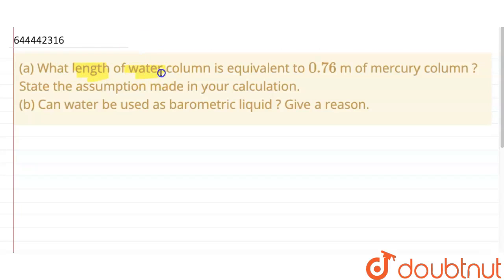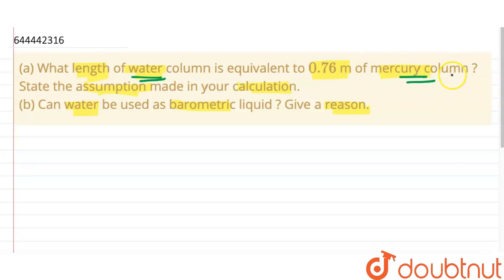The question is: what length of water column is equivalent to 0.76 meters of mercury column? State assumptions made in your calculation. Can water be used as a barometric liquid? Give a reason. For the first part, we need to find the length of water column equivalent to 0.76 meters of mercury column. We will equate the pressures.